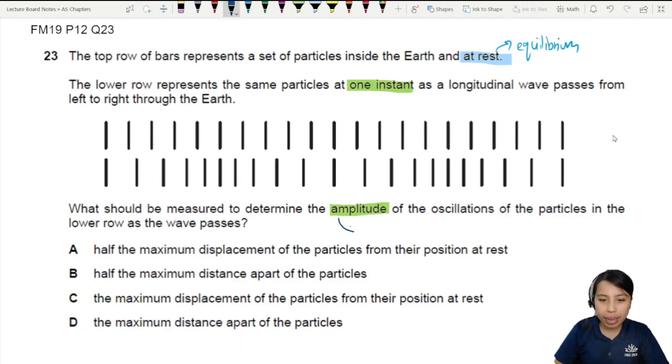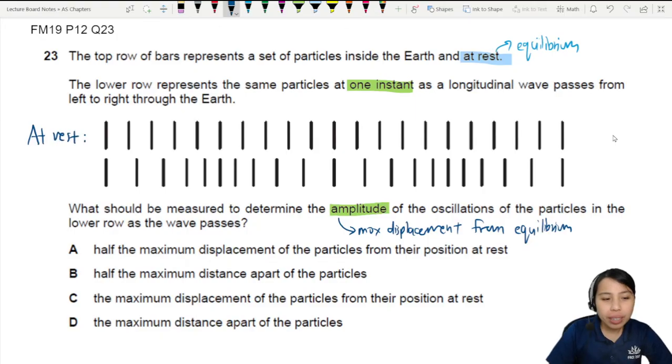So to recap, to find amplitude, you want to find the maximum displacement from the middle position, also known as the equilibrium position when it is at rest. So the definition of amplitude, you can look at it at the bottom, maximum displacement from at rest. So that will go with choice C.